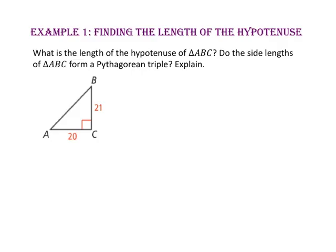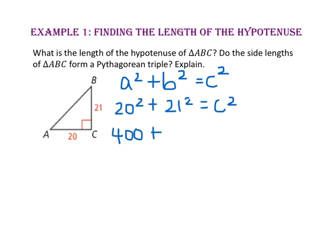In example 1, we will find the length of the hypotenuse. What is the length of the hypotenuse of triangle ABC? Do the side lengths of triangle ABC form a Pythagorean triple? Since triangle ABC is a right triangle and we have the length of two sides, let's use the Pythagorean Theorem: a squared plus b squared equals c squared. Since sides AC and BC are legs, we will use 20 and 21 for a and b. 20 squared is 400 and 21 squared is 441, so 841 equals c squared.